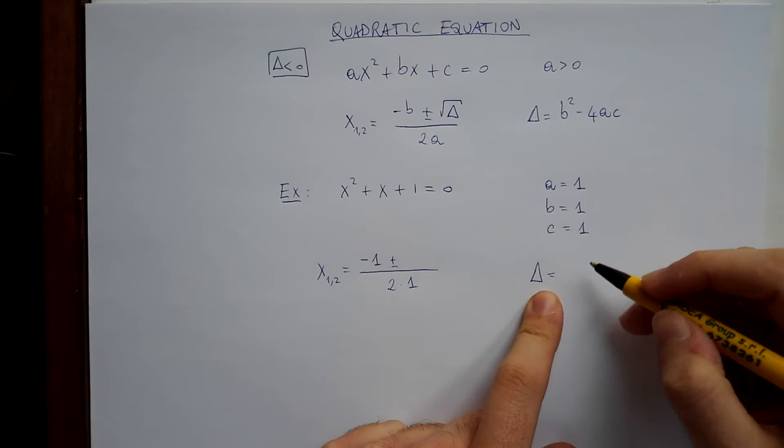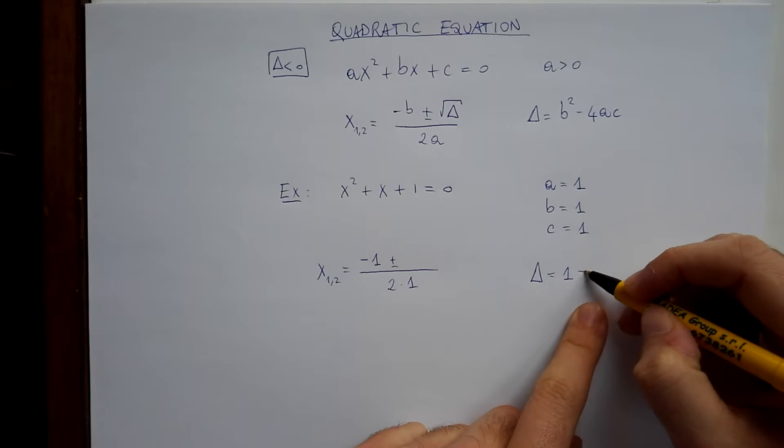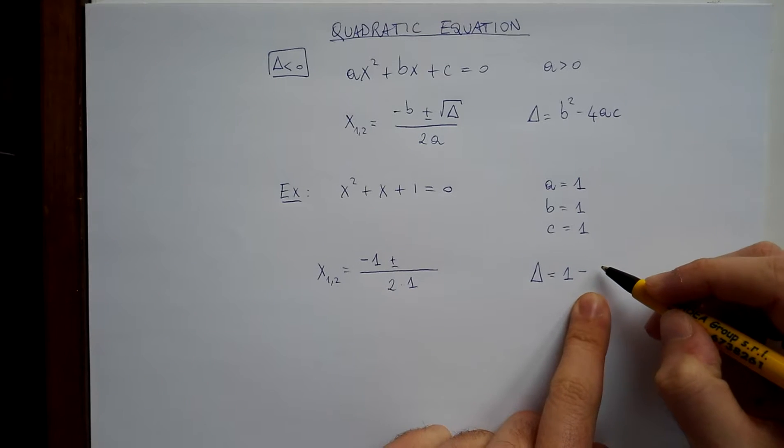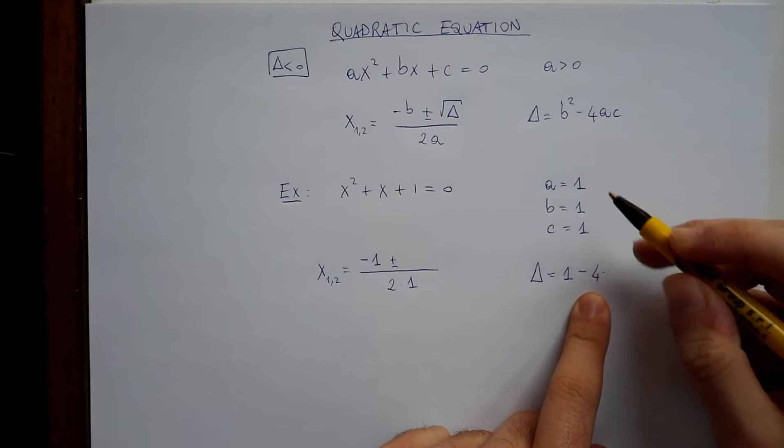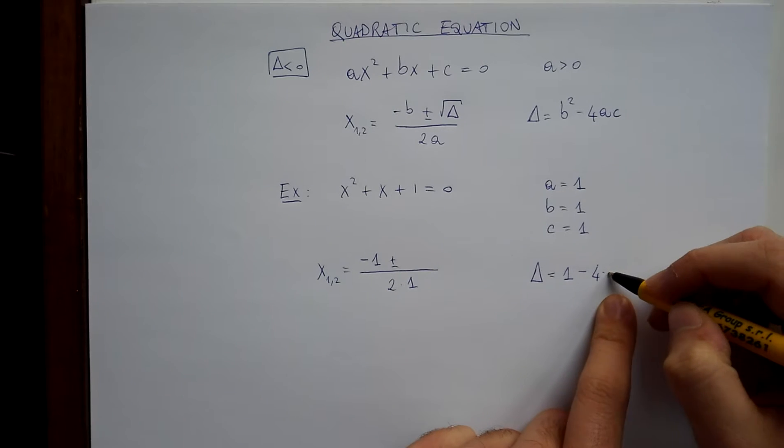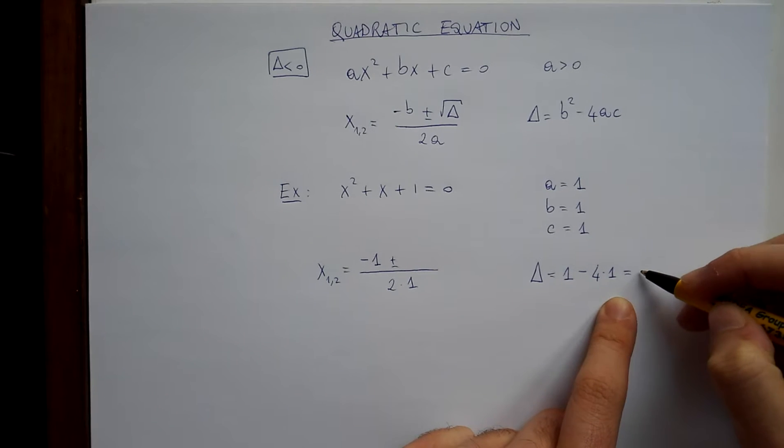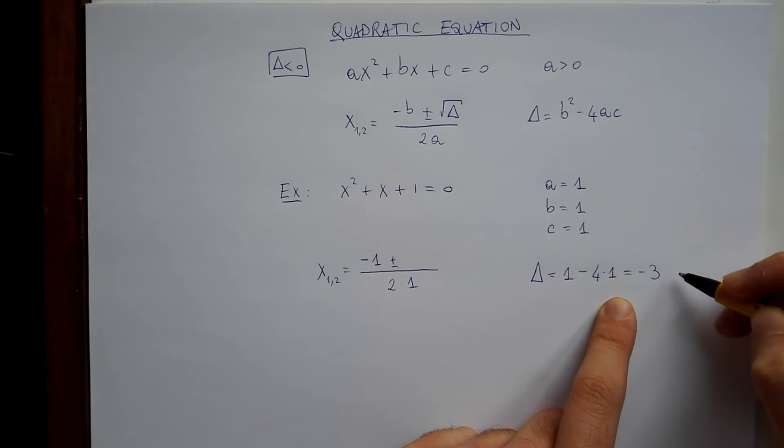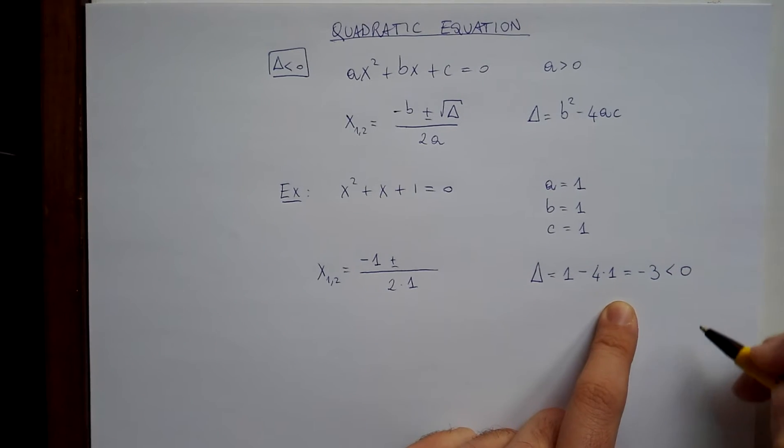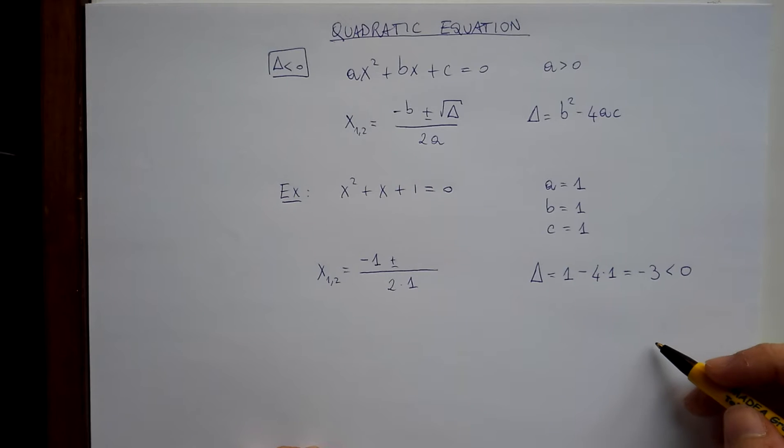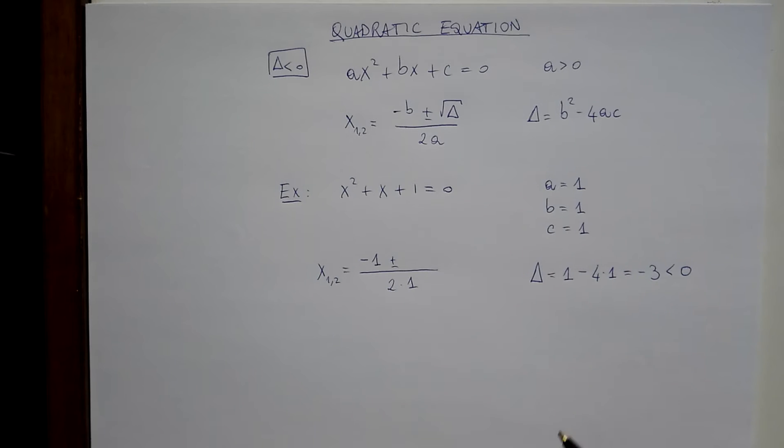Delta is b squared, so 1 minus 4 times a times c. Both are 1, so we have 1 minus 4 equals minus 3, which is smaller than zero. This means, as we have seen in the video about quadratic equations in general, that this equation has no roots.